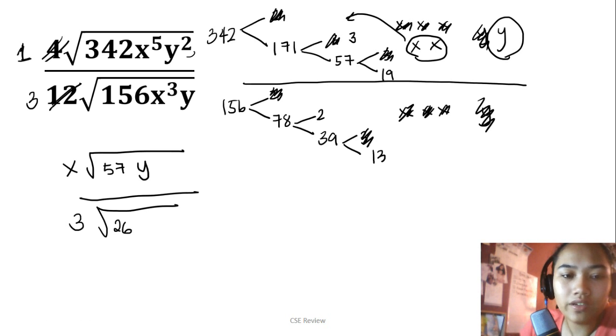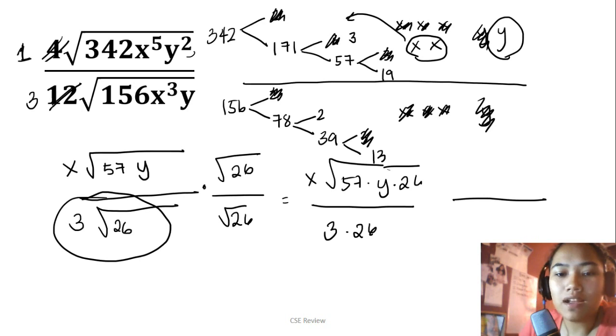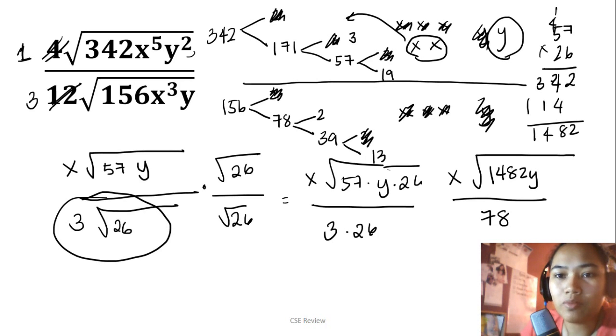But with radicals, you can't leave radicals on the bottom. So what you would do is multiply both sides by the square root of 26 to remove that 26. On the bottom, it becomes 3 times 26. Then you have x times the square root of 57 times y times 26, all under the radical. On the bottom, you have 26 times 3 which is 78. On top, you have x times the square root of 57 times 26. That's 1,482y. That's the number that goes on top.